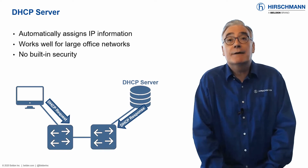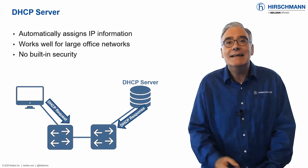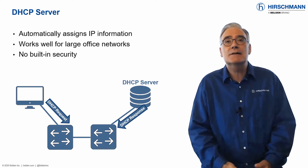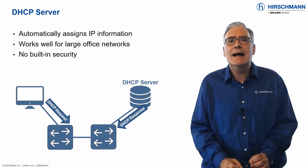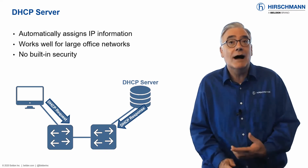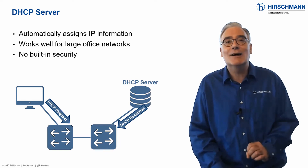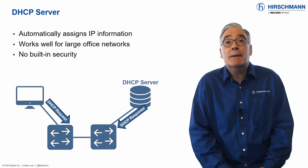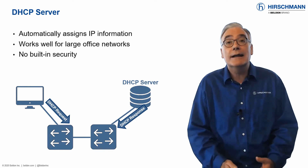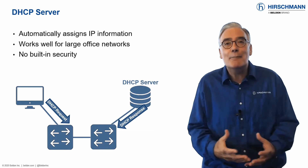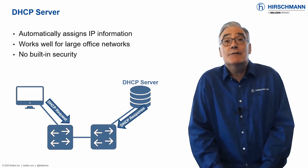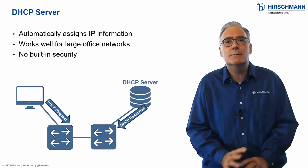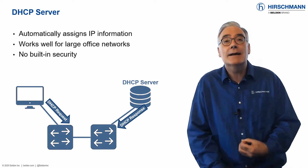Dynamic Host Configuration Protocol, known as DHCP, is a network protocol used to provide IP addresses and other configuration parameters to end devices. If you attach your computer to a network in the office or at home, there's a very high chance that it will get its IP address via DHCP. In the past, DHCP was not commonly used on industrial networks, but as these networks get bigger, DHCP becomes an attractive option for simplified deployment. DHCP was never designed to be secure, and it forms the basis for many network attacks.